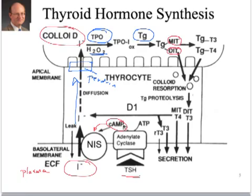The same enzyme, TPO, is also responsible for linking MIT and DIT to form T3, and two DITs to form T4. TSH has a triple role: stimulating iodine uptake, hormone synthesis and secretion, and thyroid growth — meaning it also stimulates replication of cells associated with the thyroid gland.